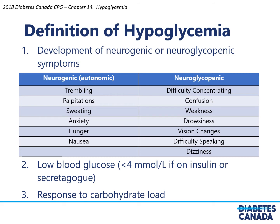Neuroglycopenic symptoms are more specific to low blood sugar, given that they represent lack of blood sugar to the brain. These symptoms include difficulty concentrating, confusion, weakness, drowsiness, vision changes, difficulty speaking, or dizziness. In addition, there needs to be a low blood glucose defined as less than 4 millimoles per liter if the patient is on insulin or secretagogue, and finally a response to carbohydrate load. All three parameters need to be present to confirm hypoglycemia.